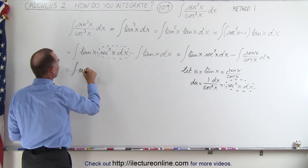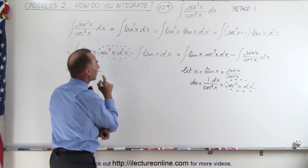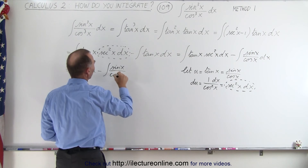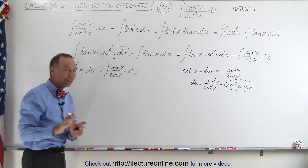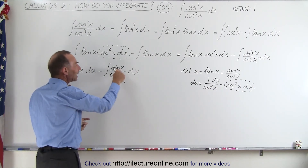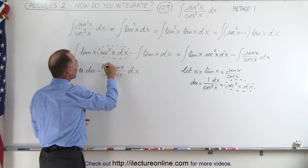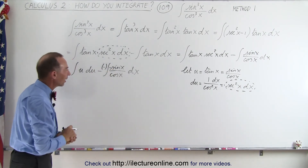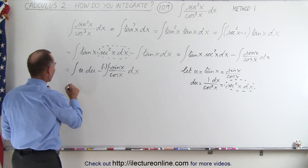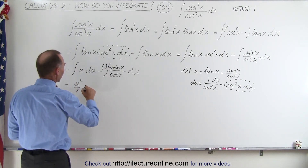The first integral then becomes the integral of u times du. For the second integral, we have sine of x divided by cosine of x dx. We let u equal cosine of x, so du equals negative sine of x dx. We need a negative sign and then another negative sign, which cancel, leaving u in the denominator and du in the numerator, which we can also integrate. This becomes u squared over 2, and the two negatives cancel to give a plus.